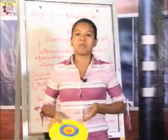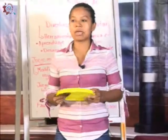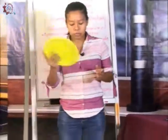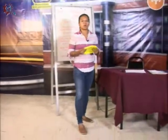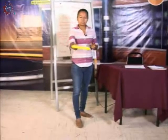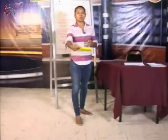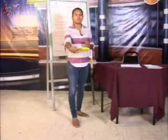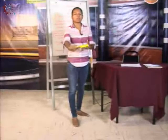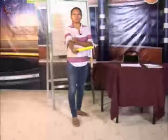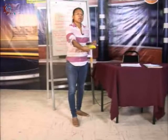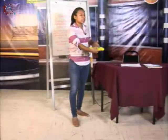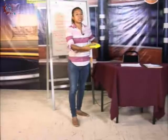¿Cómo va a ser nuestro parado para poder lanzar el frisbee? Si vamos a lanzar con la mano derecha, nuestro pie derecho debe estar hacia el frente y el izquierdo un poco hacia atrás. Vamos a hacer un movimiento oscilatorio con nuestra mano, sintiendo ese movimiento oscilatorio en la muñeca. Vamos a darle una dirección al frisbee hacia nuestro cúbito y radio del cuerpo, y llevar el frisbee hacia nuestro oblicuo externo del abdomen.